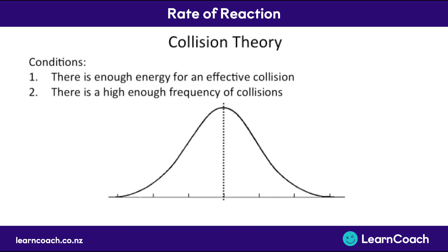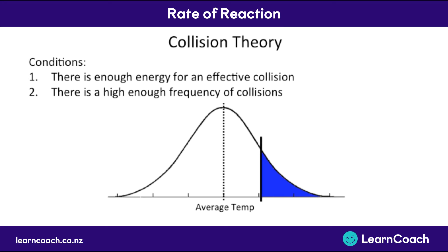Another way to look at this is that there's a certain average temperature that your reactants will have. The really hot atoms at the top are going to have lots of energy, so they'll have lots of effective collisions. But the colder molecules won't have as many effective collisions, so if your average temperature is low there won't be a high frequency of collisions. But if we increase the average temperature, lots of molecules are going to be above this cutoff energy point and there can be lots of collisions. This is the second graph we need to look at.